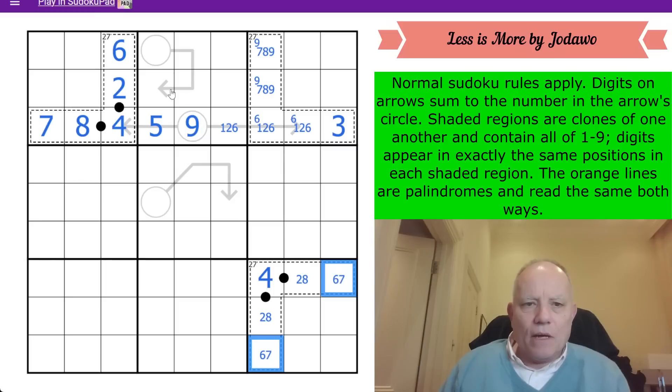This cell - 3 digits adding up to a number here. It had to be 6, 7, 8, or 9, but it can't be 6 or 9, so that's 7 or 8. There must be a 1 on this arrow, therefore this isn't a 1. If it's 8, it's 1-3-4. If it's 7, it's 1-2-4. So there's definitely a 4 on this arrow. I know it's not 1-2-5 if it's 8 because of that.